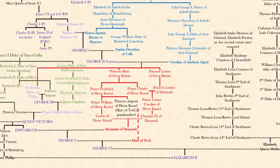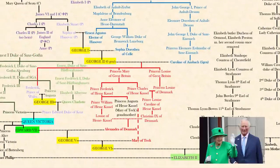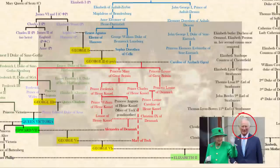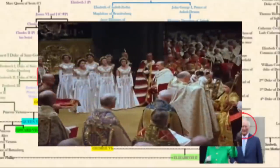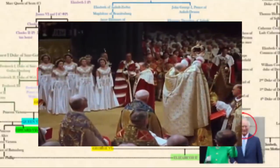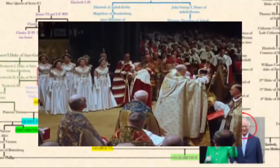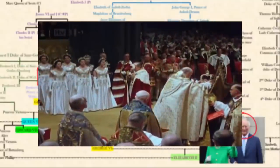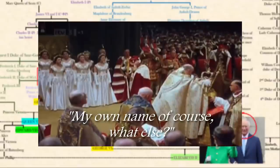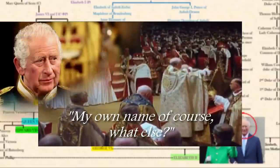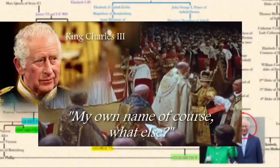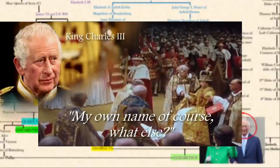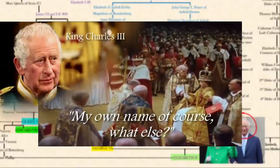337 years later, after having Georges, Edwards, a Victoria, and another Elizabeth, we now have Charles for the third time. When Princess Elizabeth ascended the throne on the death of her father, she was asked what name she wished to use as queen. She is said to have replied, 'My own name, of course — what else?' Charles then decided to use his own name as his personal choice, just like his mother.